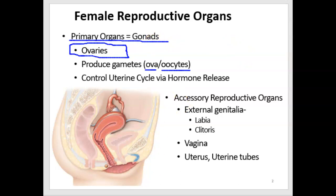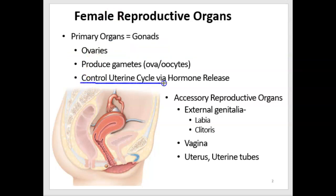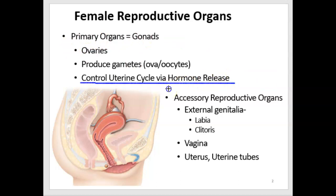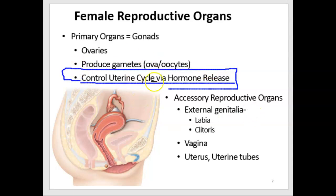The other thing that ovaries do in the female is control the monthly cycle in the uterus. That's because the ovaries secrete hormones that travel in the blood to the uterus and control the lining of the uterus.